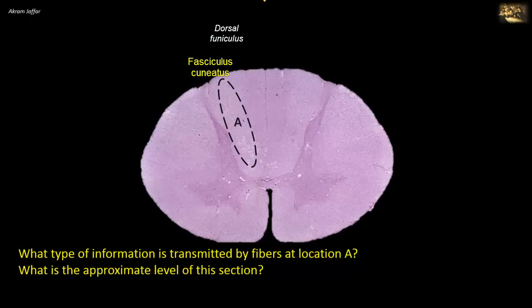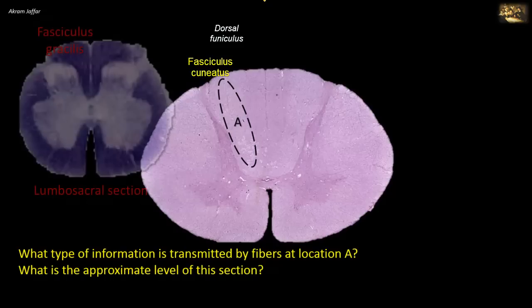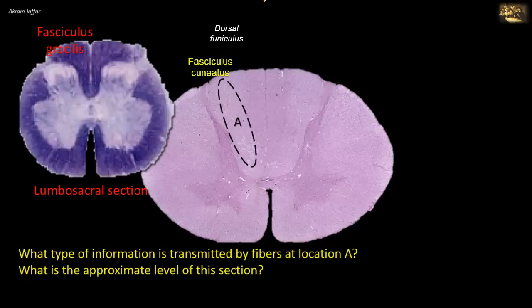The difference is that sensations from the lower limb ascend medially in the fasciculus gracilis, while sensory information from the upper limb ascends laterally in the fasciculus cuneatus. The fibers comprising the dorsal column are therefore somatotopically organized. Fibers are added to the lateral side of the dorsal funiculus as we ascend rostrally. At lower spinal levels — sacral, lumbar, and lower thoracic — only the fasciculus gracilis is seen in sections, because the fasciculus cuneatus is added from above the mid-thoracic level upward into the cervical region.